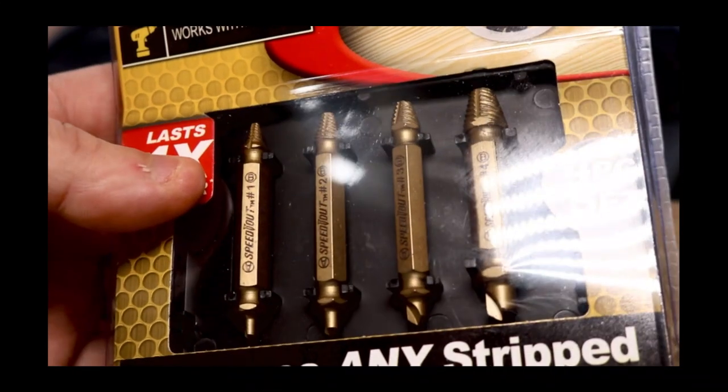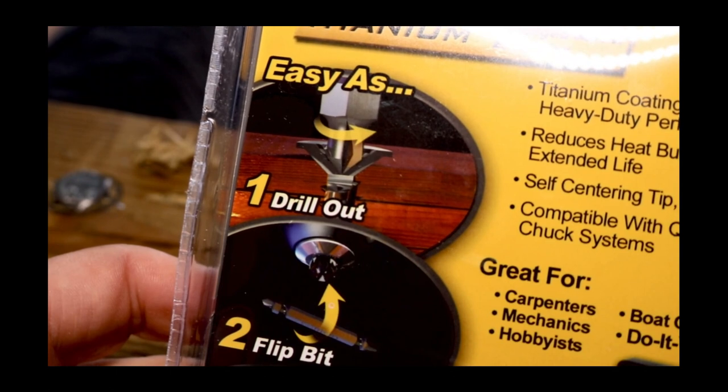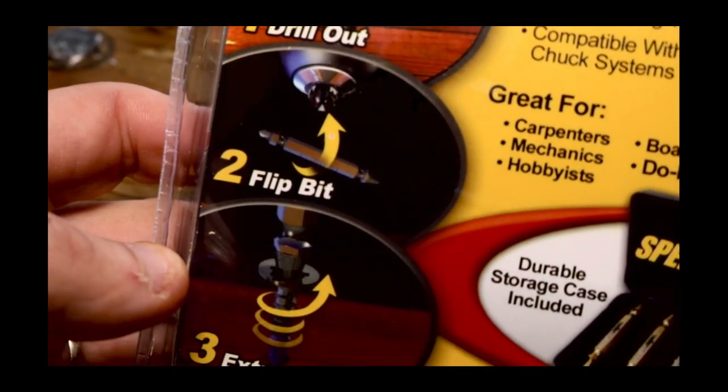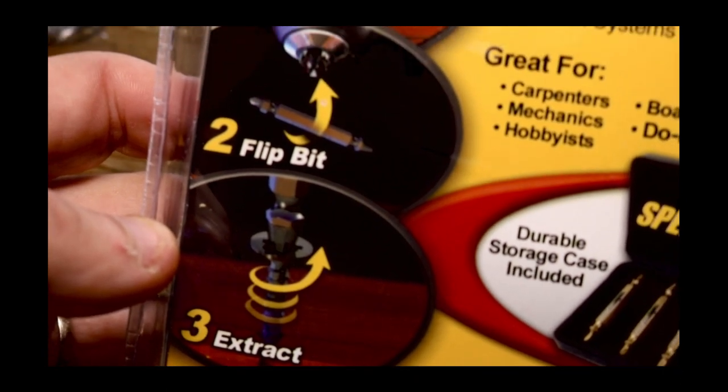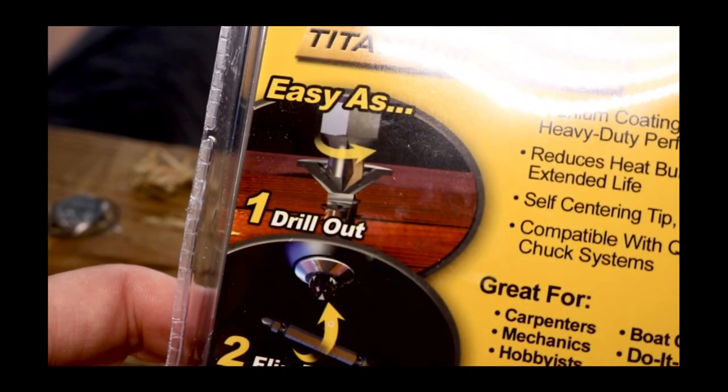And they seem to be pretty straightforward. You have a stripped screw, you insert one end of this bit, you throw your drill in reverse, and then basically drill it out. You then flip the bit and extract it using the other side.